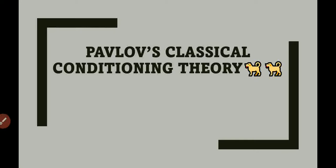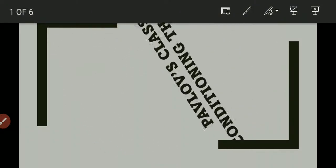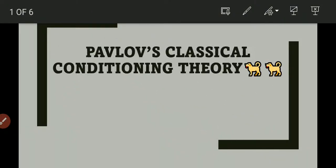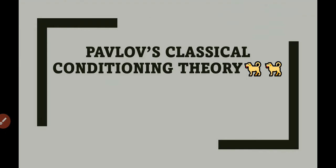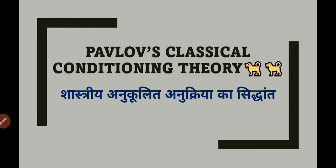Adhigam ke sahcharya siddhant — this is the association theory of learning. Adhigam ke sahcharya siddhant ka arth hai ki jis mein hum sahcharya, that is association, develop karein between the stimulus and response. So it is also known in Hindi as 'shastriya anukulit anukriya ka siddhant.'